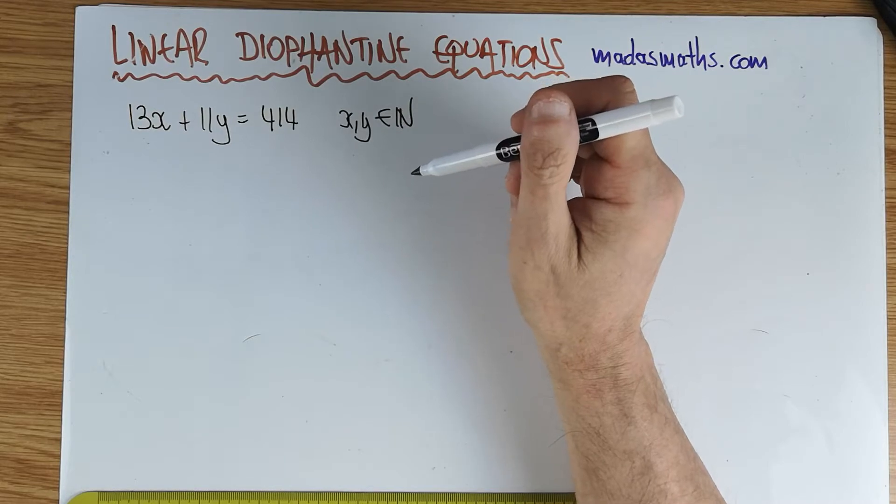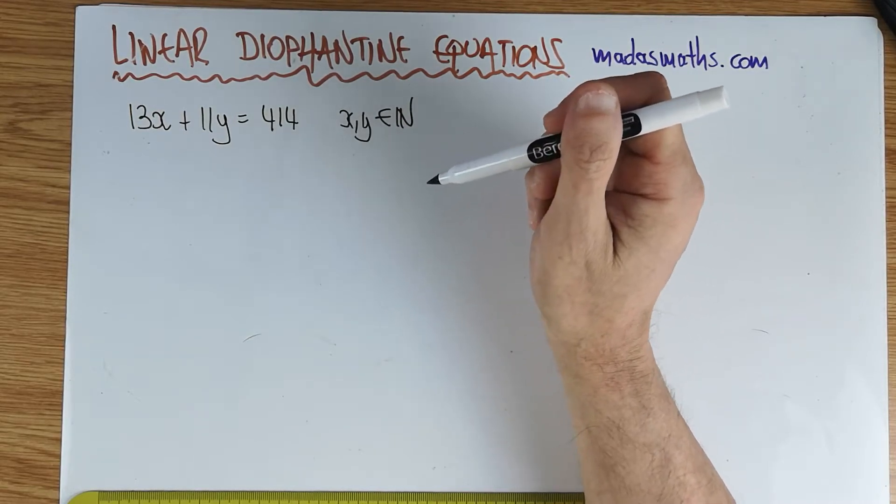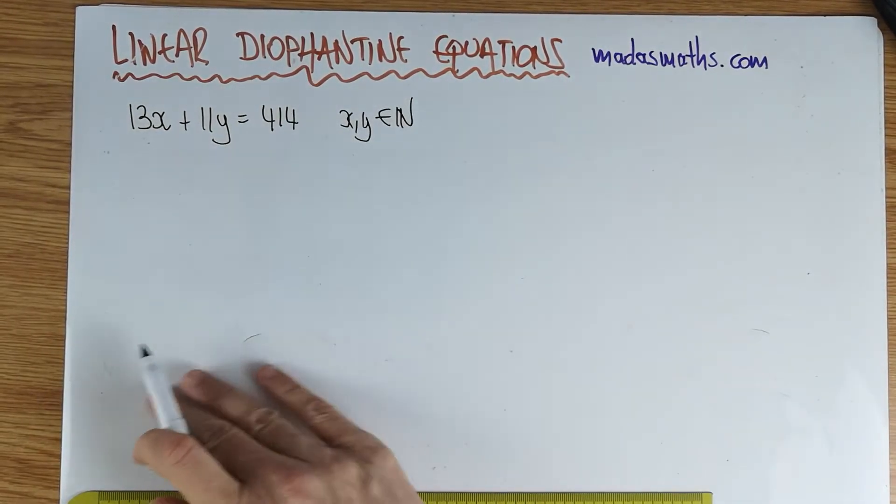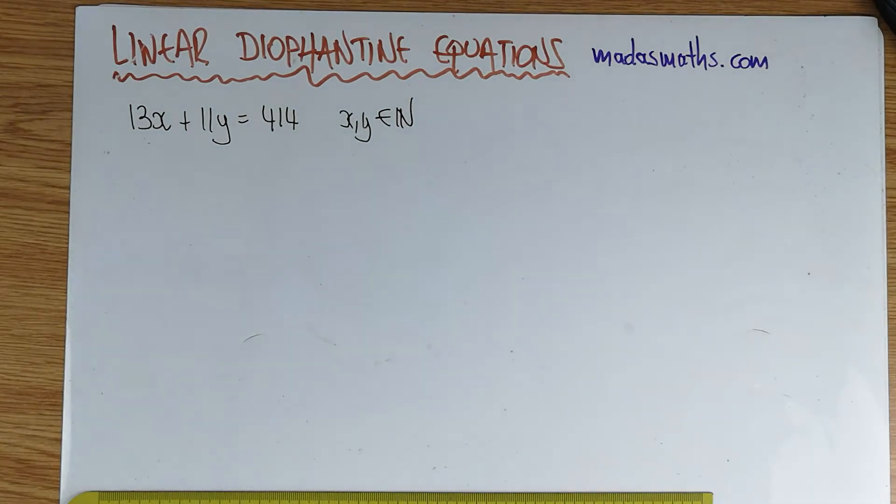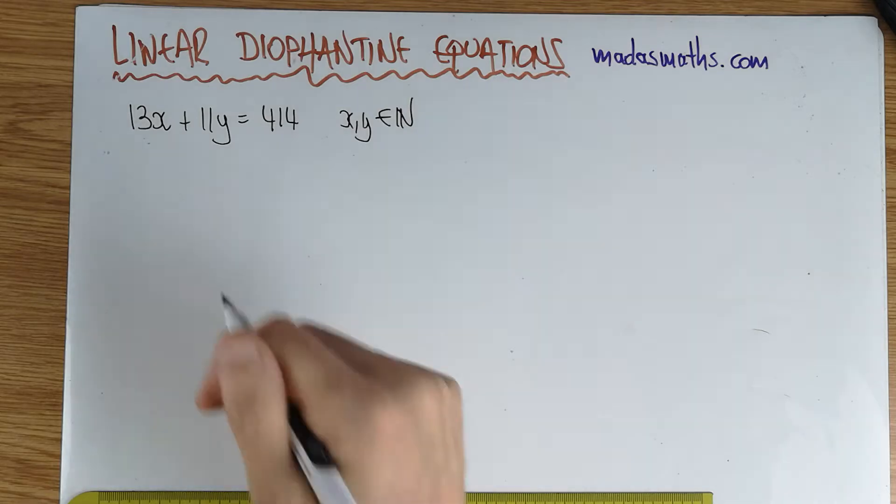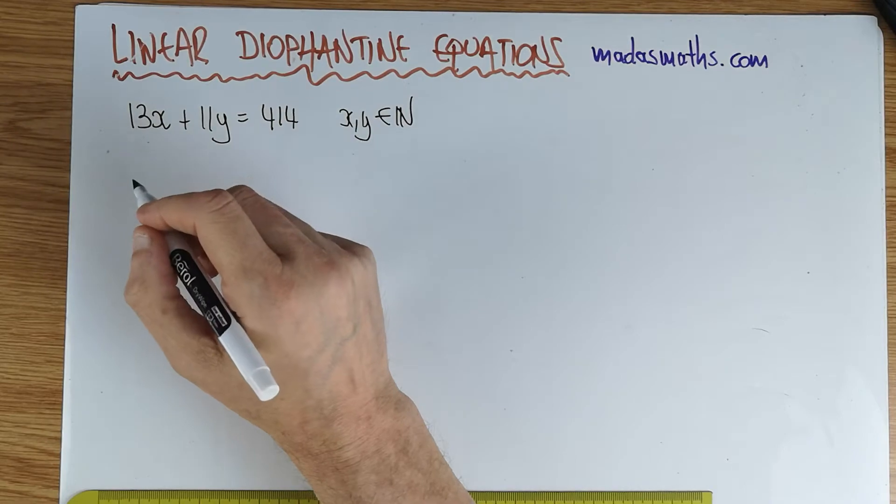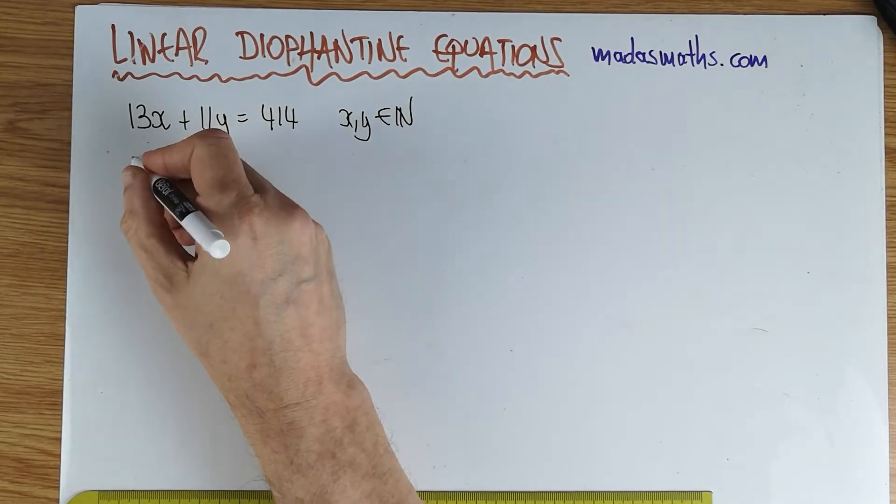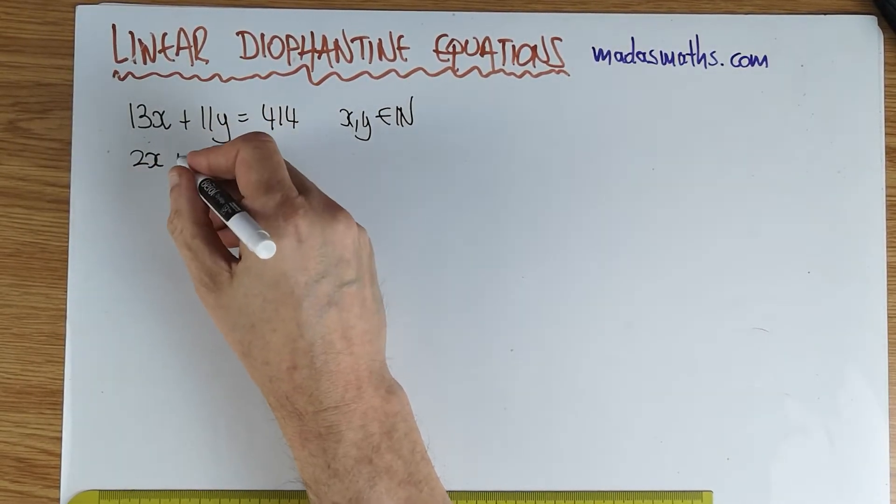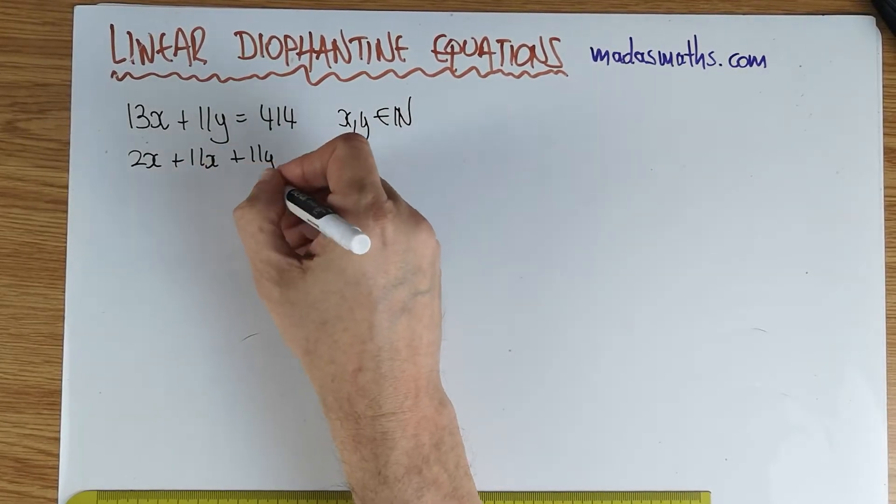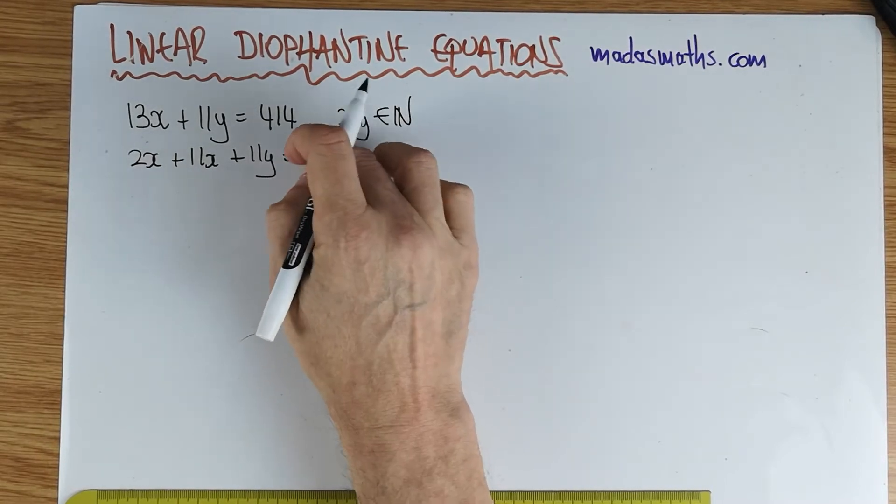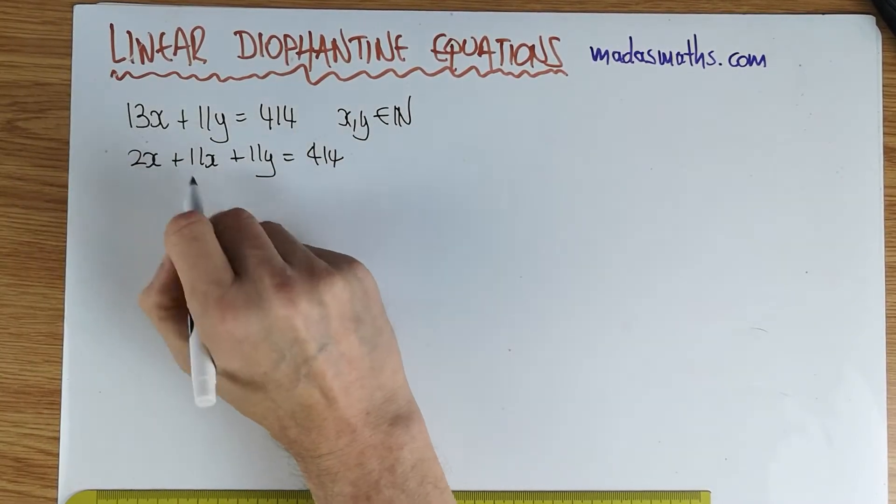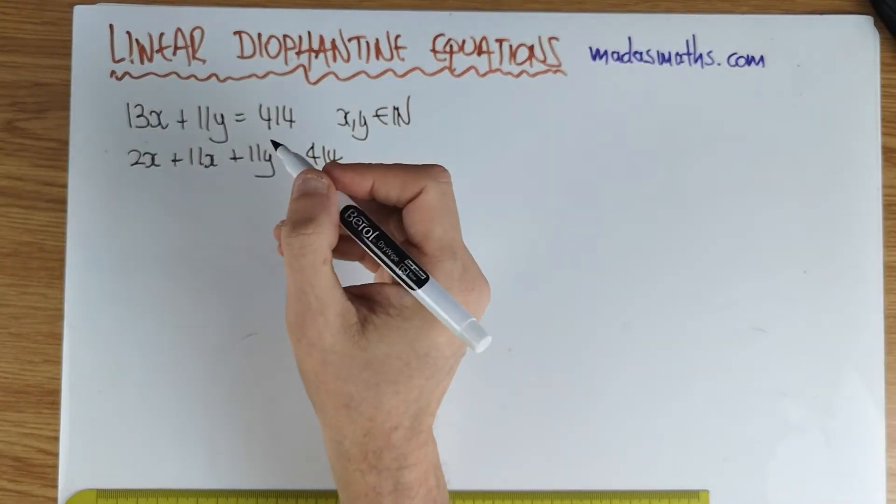So we're looking for a special type of solution. You're also going to have to put up with my cough, which has gone very bad recently, so please bear with me. Okay, this is my method, and I had to look in my university notes for that. The first thing is to make the coefficients of x and y equal. So I'm going to do that by writing this as 2x plus 11x plus 11y equals 414.